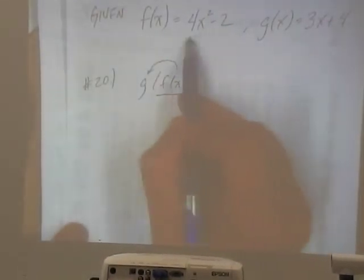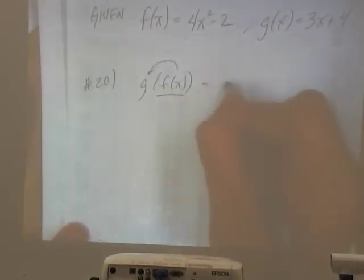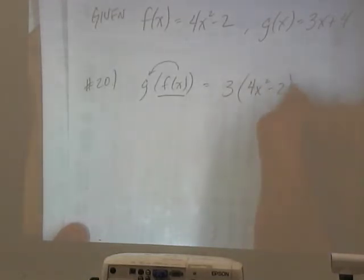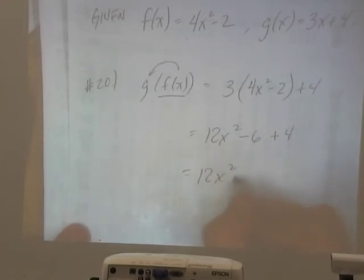So I'm going to be taking this and plug it in for that x. So that'll give me 3 times 4x squared minus 2 plus 4. So that's 12x squared minus 6 plus 4 for 12x squared minus 2.